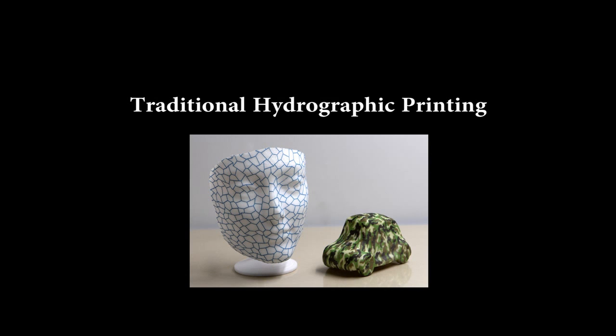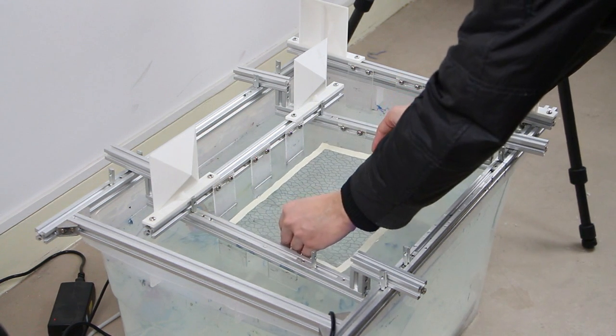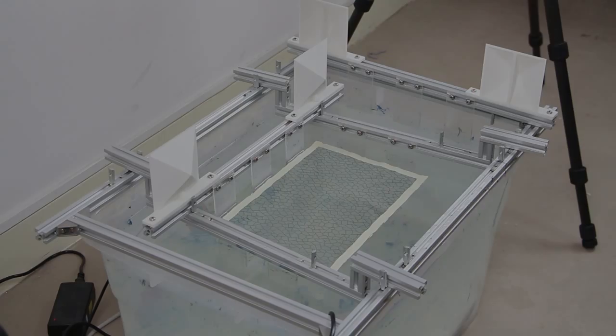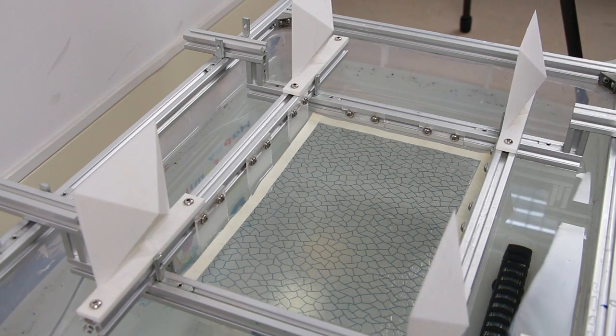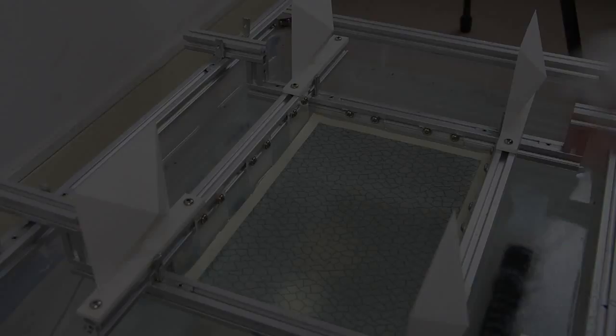Hydrographic printing is a widely used technology in mass production for transferring repeated color patterns to a 3D surface. It uses a PVA film with printed color patterns put on top of water. Then an activated chemical is sprayed on the film, softening the color film to make it easily stretchable.